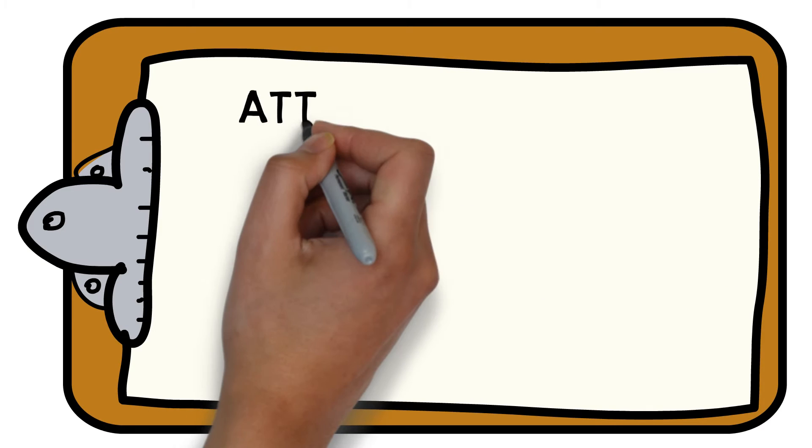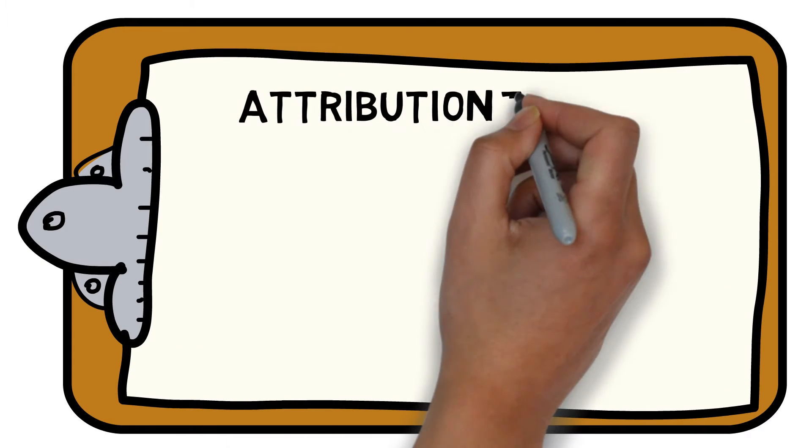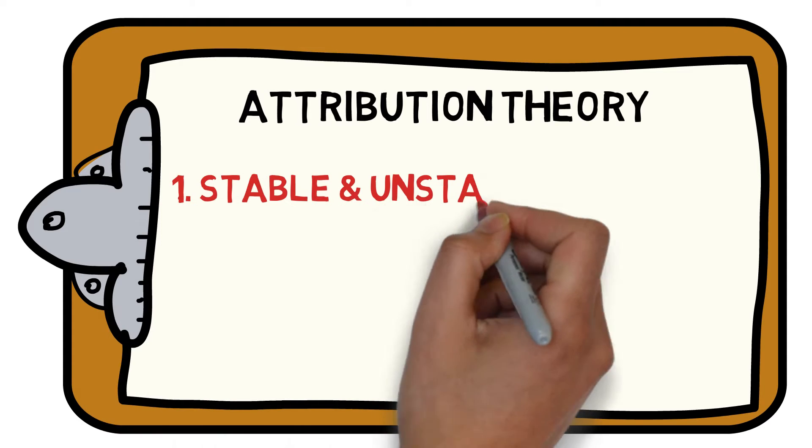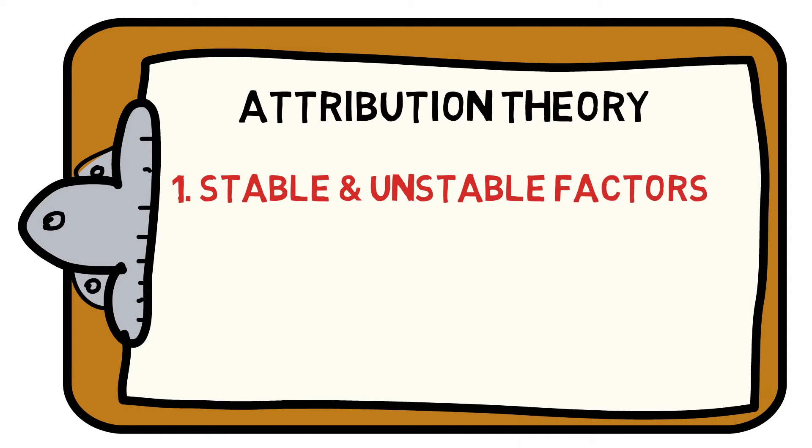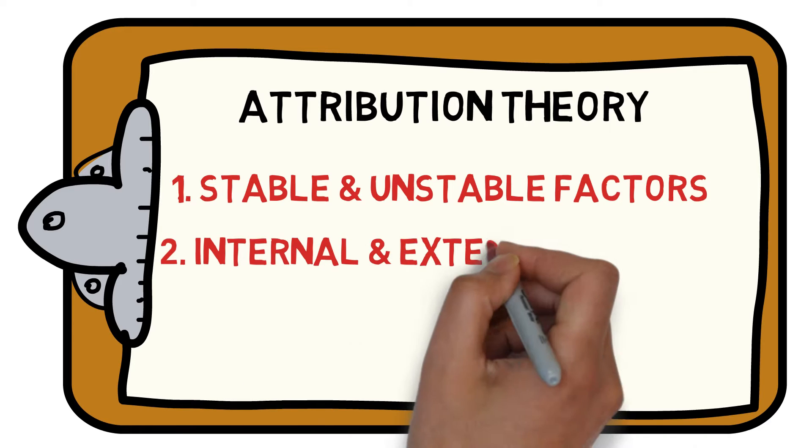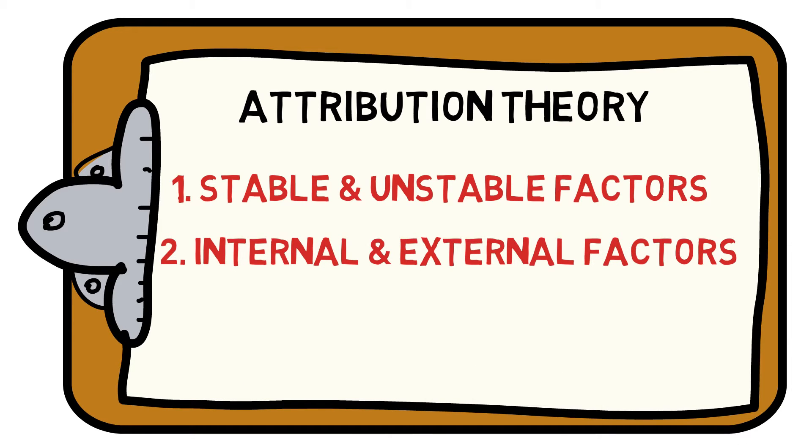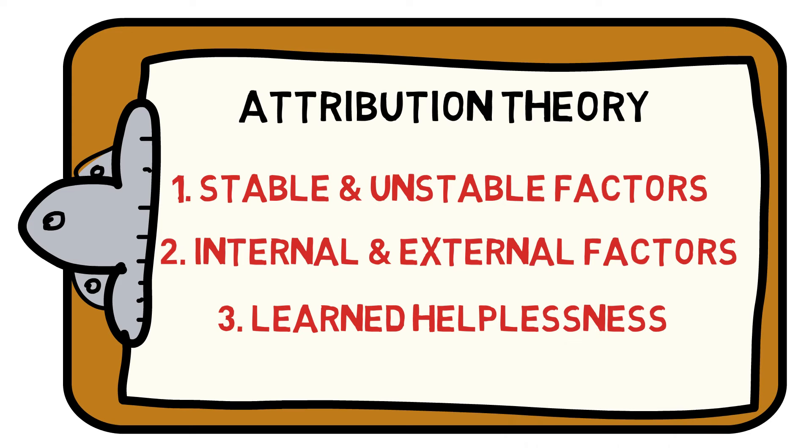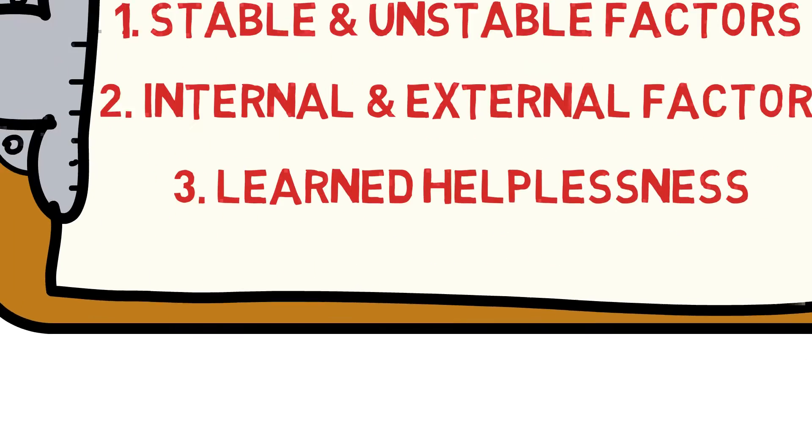Welcome to the Sports Science Hub's guide to everything you need to know about the fundamentals of attribution theory. We will help you understand the difference between stable and unstable factors, the difference between internal and external factors, and what causes learned helplessness. Let's get started.